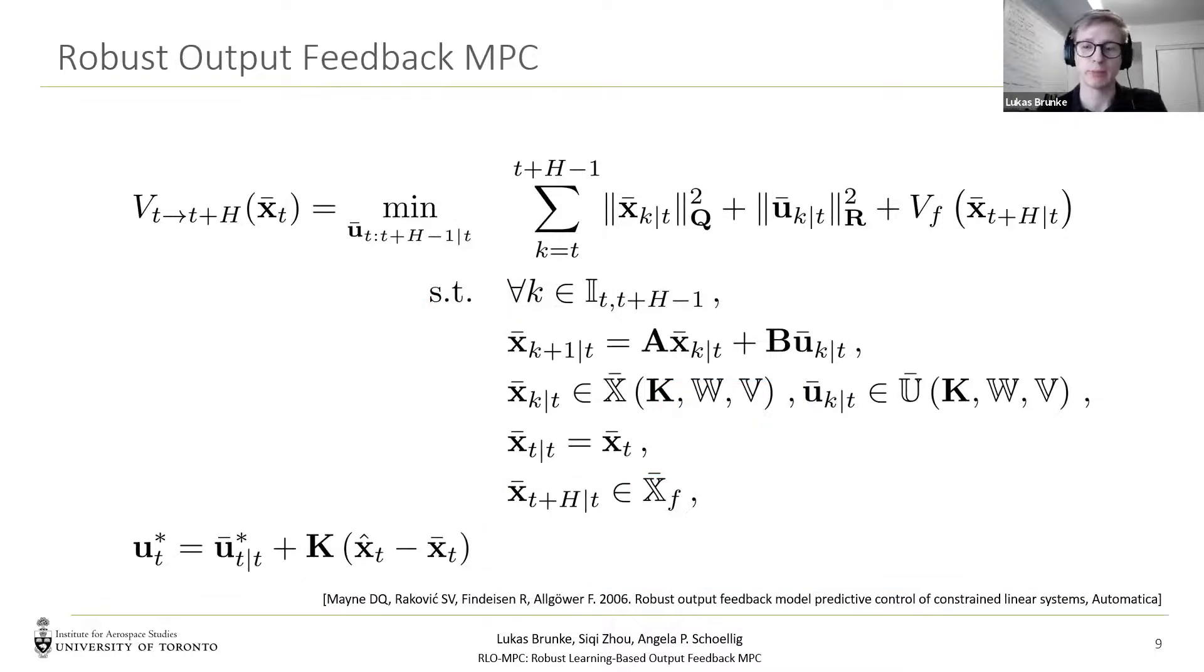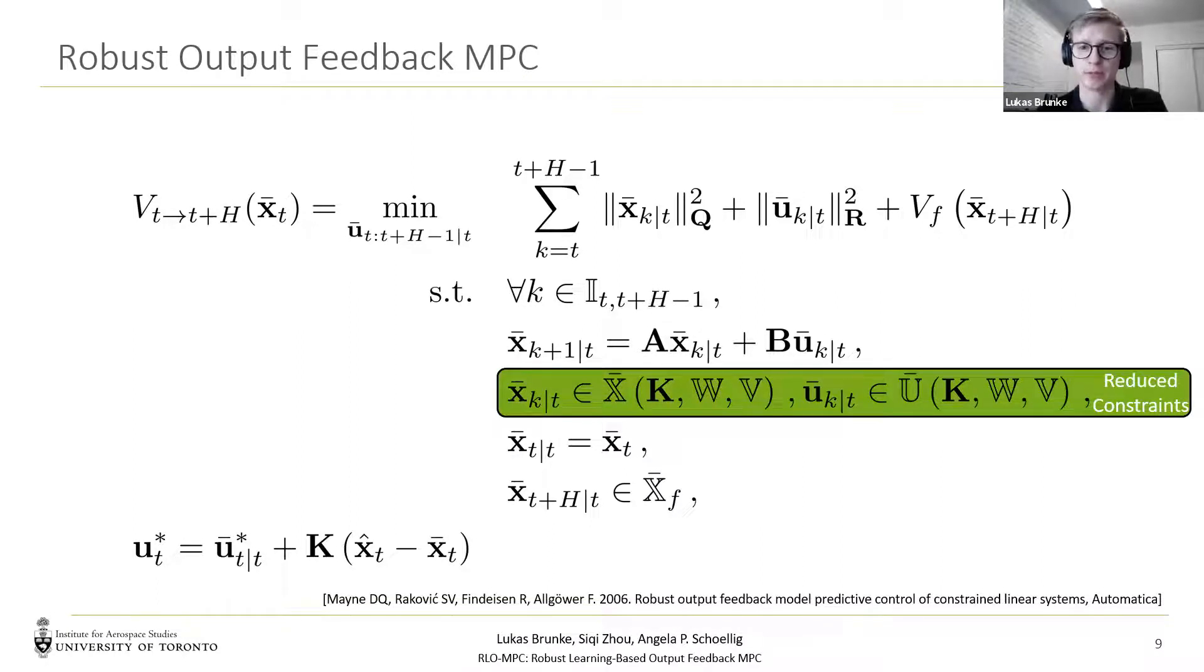So how do we need to change the optimization problem for this case? For the robust output feedback MPC, we now have to account for the additional errors resulting from the measurement noise when shrinking our constraint set for the nominal system. Further, our stabilizing feedback now considers the error between the state estimate and the nominal state, since we do not have access to the true state anymore.